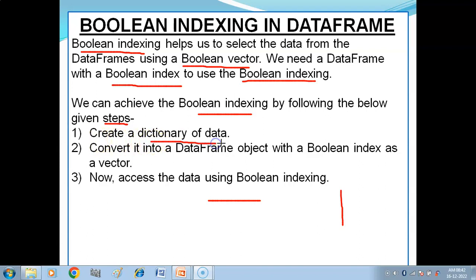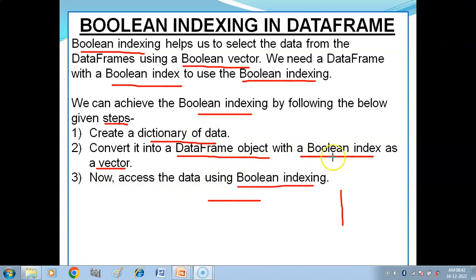To use boolean indexing, follow these steps: first, create a dictionary of data. Then convert it into a DataFrame object using pandas' DataFrame function. You can explicitly define a boolean index, otherwise the default index will be used. Now you can access the data using boolean indexing.